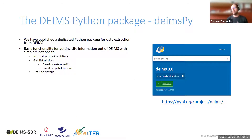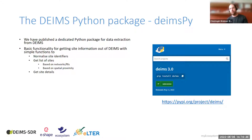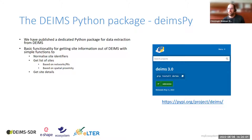We have a very new addition: a Python package called deims-py. This package makes it easier to get data from DEIMS, targeting scientists who are more familiar with Python or R rather than direct API calls. It's available as an official Python package on PyPI.org and has simple functionality to get site information — you can normalize site identifiers, get lists of sites based on network affiliation, eLTER membership, or spatial proximity, and get site details.